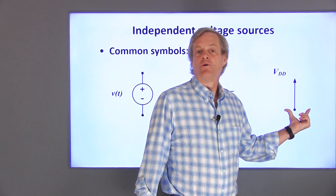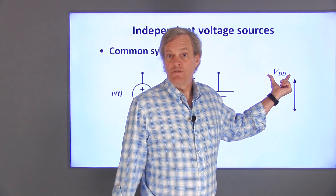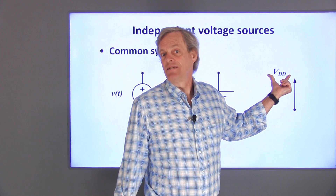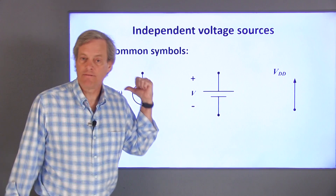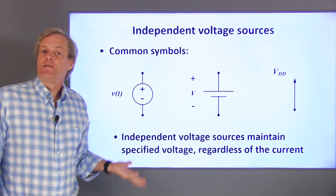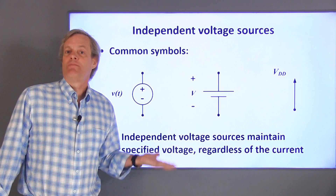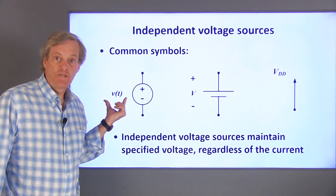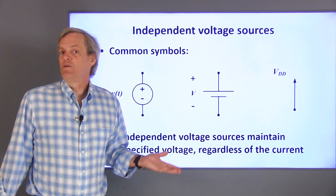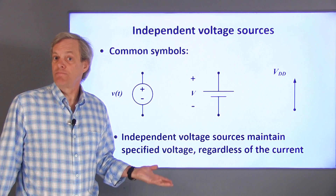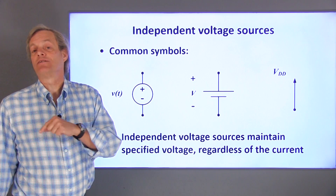Finally, this arrow also indicates a voltage source. The voltage value is usually taken to be relative to ground, which will be labeled elsewhere on the circuit schematic. The main property of ideal, independent voltage sources is that they provide the specified voltage regardless of the current demanded of them. This means that we don't know anything about what current is being provided by the supply until we connect it to a circuit.